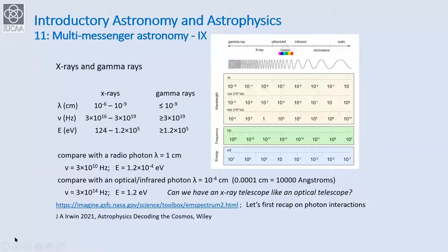This is the same slide we discussed earlier, just to remind you of the energies involved. X-rays range from about 120 electron volts to about 1.2 × 10⁵ electron volts, which is about 120 kilo electron volts, and gamma rays are higher than that.